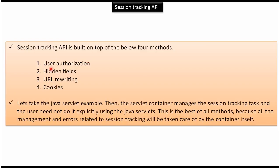The first method is user authorization. The second method is hidden fields. The third method is URL rewriting. The fourth method is cookies.